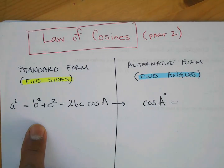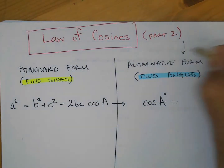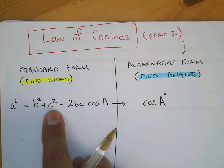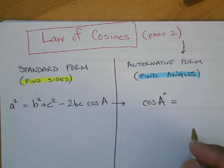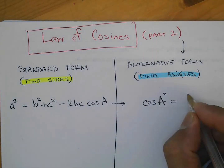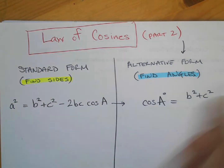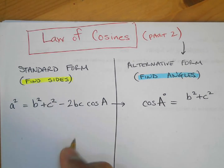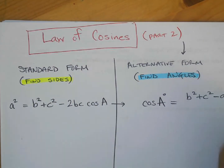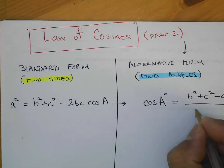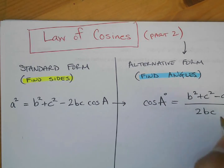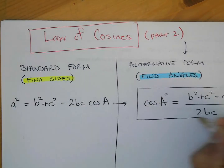Part 1 is the formula for finding sides; Part 2 is this one over here. They're taking that formula and isolating the angle by itself, so cosA = (b² + c² − a²) / (2bc). You're going to use these new formulas to find angle measures.